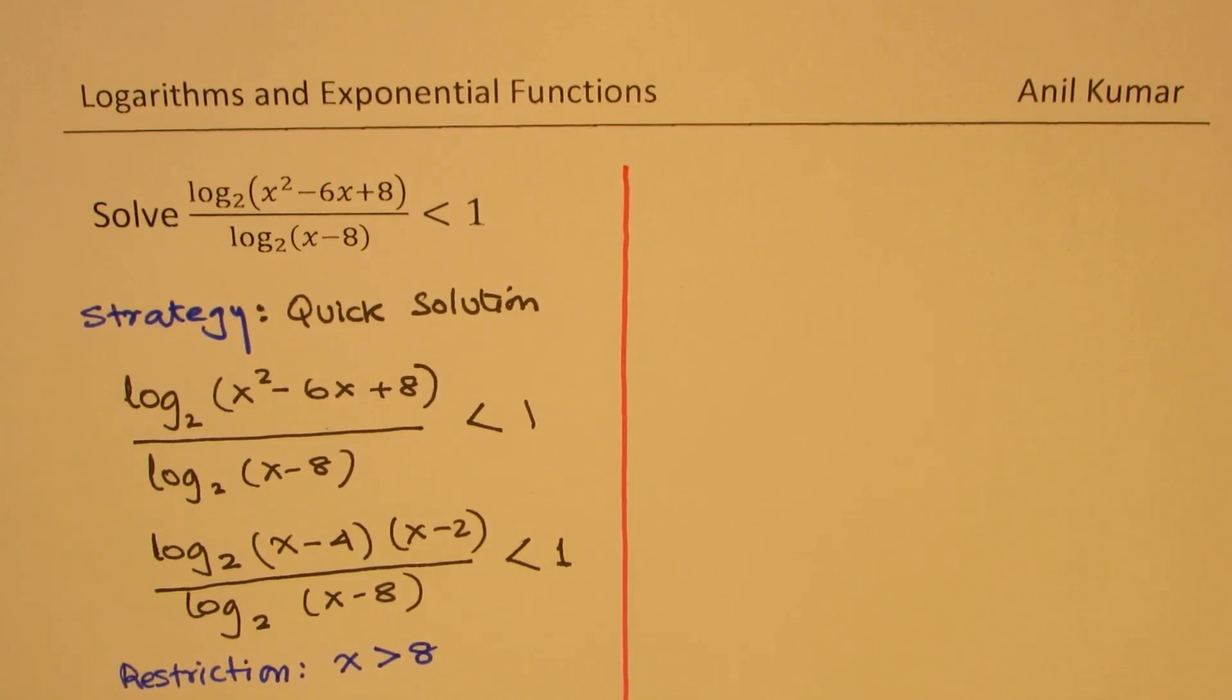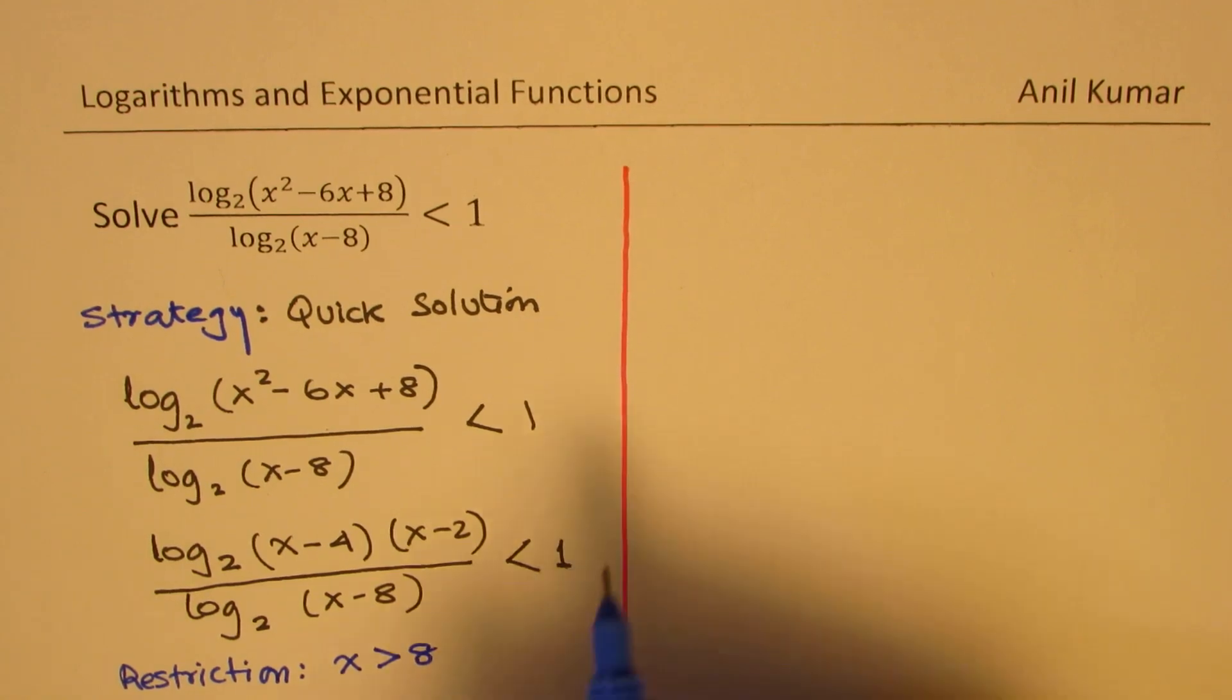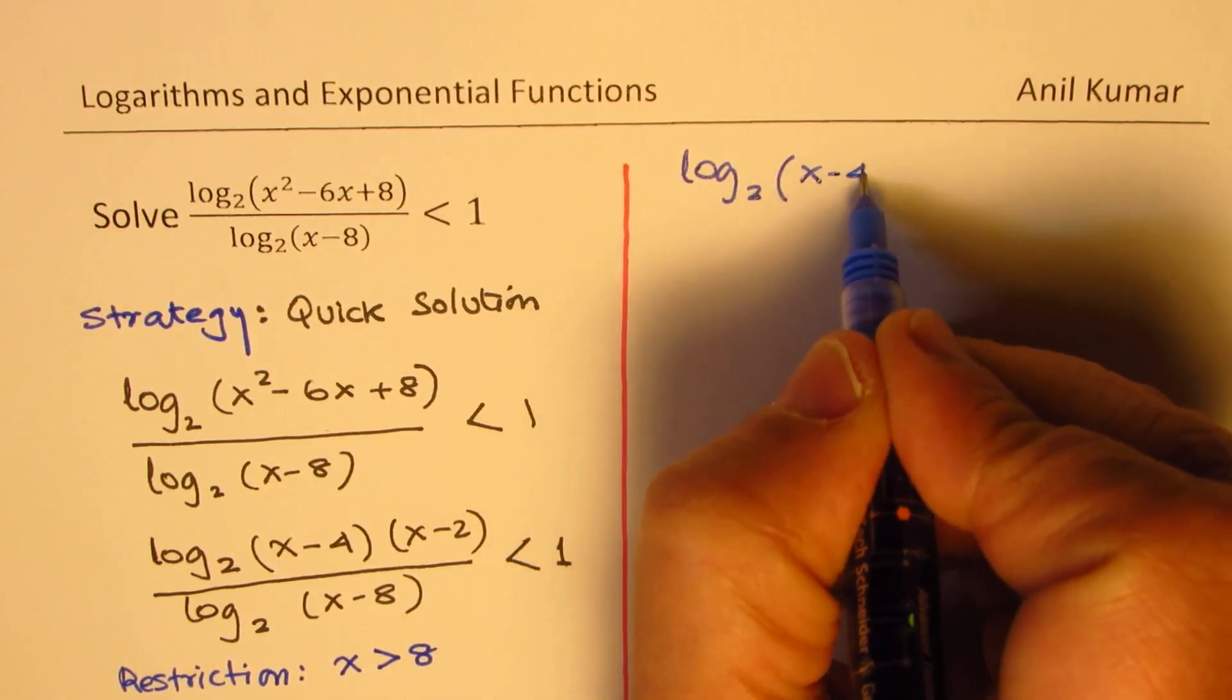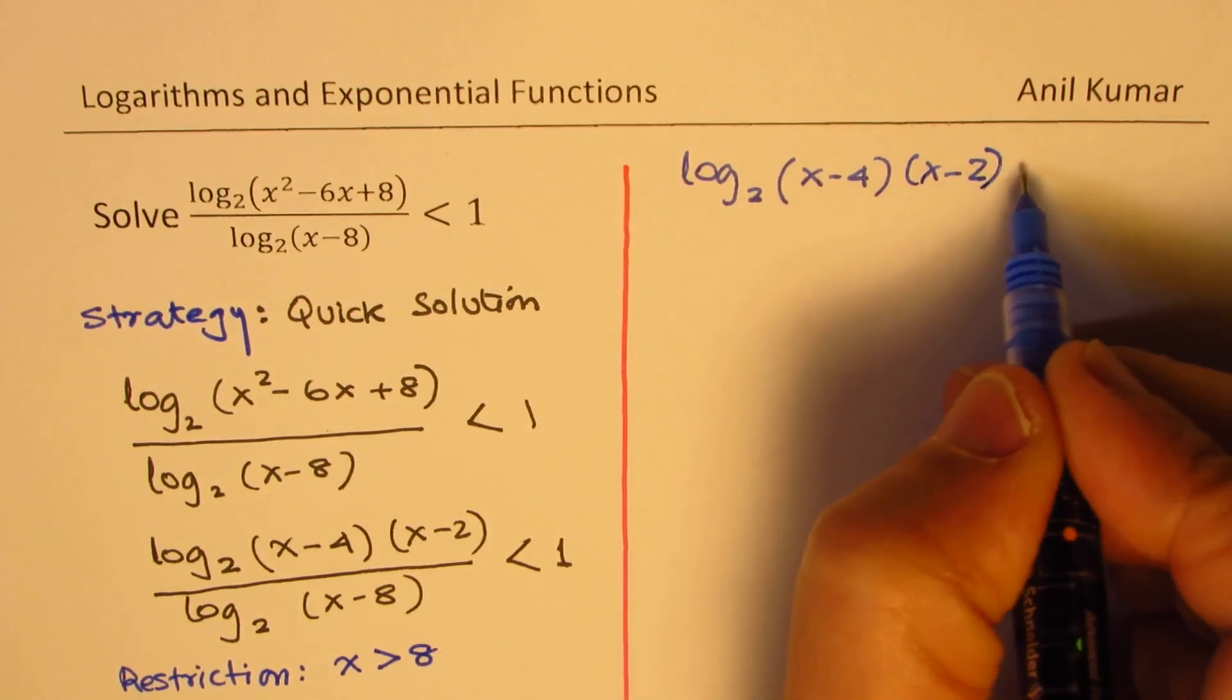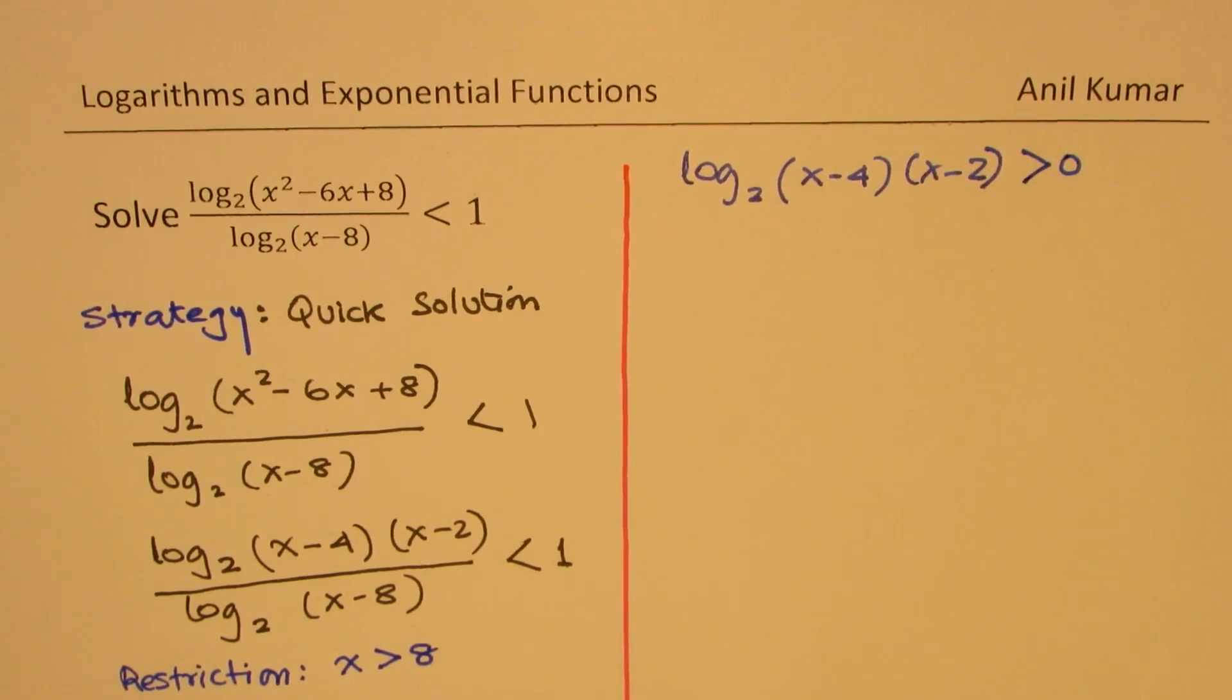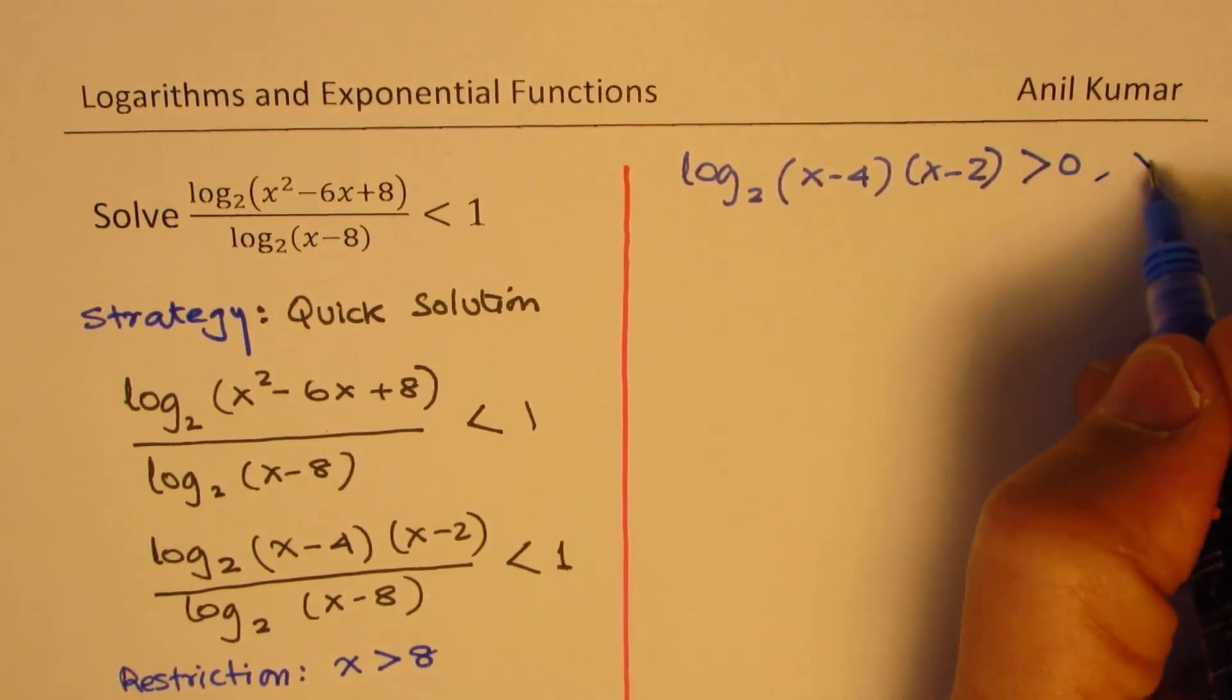The second part of this is we are saying that the logarithmic function is basically less than 1. For the logarithmic functions, if we are having a value greater than 8, numerator is positive. Because if you look at it, this is log base 2. So consider this part, that log base 2 of (x - 4)(x - 2) is actually positive. It is always greater than 0 for x greater than 8.